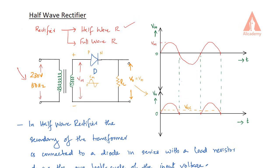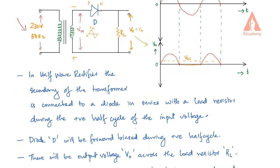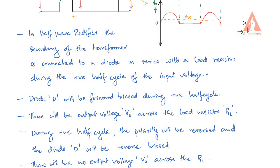During the negative half cycle, the polarity changes — the negative terminal is connected to the P-region of the diode. So the diode will be in reverse biased condition. In reverse bias, it acts as an open circuit, so the circuit is not complete. The voltage across the load resistor RL will be equal to zero. Then again at the positive half cycle, the diode is forward biased and output is available.